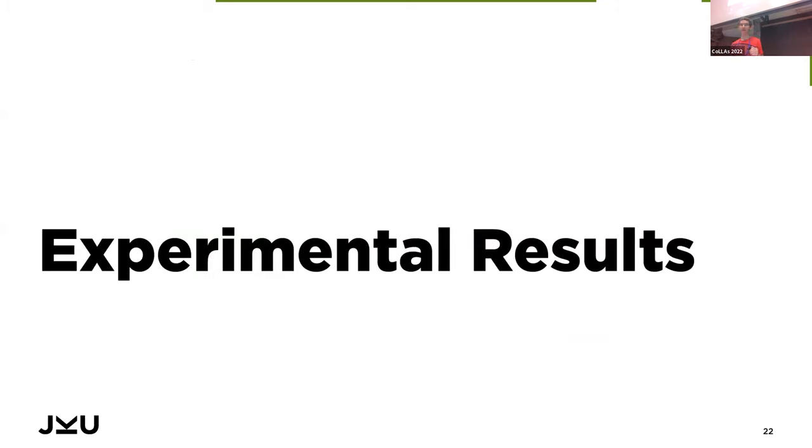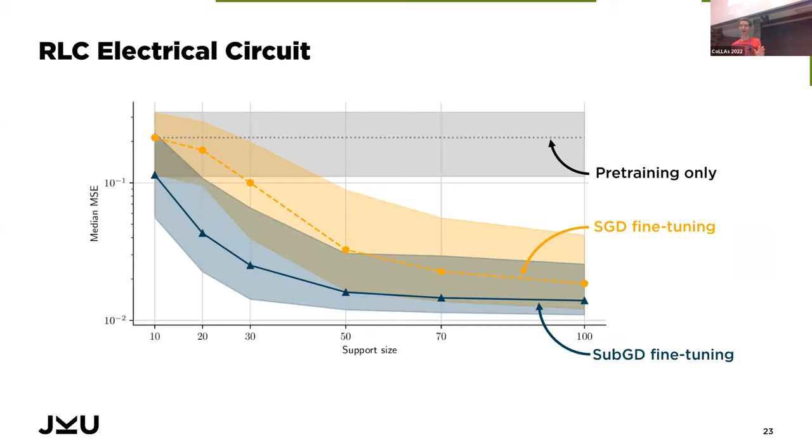Now let me briefly introduce you to some of the experimental results that we had. I won't cover all of what we did in our paper, but for the sake of time I'll just focus on one of the experiments, which is the RLC electrical circuit. The task here is to predict the behavior of an electrical circuit over time, and different few-shot learning tasks are simply given by electrical circuits of different physical properties. We measure the quality of our predictions in terms of mean squared error, which is what you see in the y-axis here, and on the x-axis you can see the support size—so this is the number of available labeled training samples that we had for fine-tuning the model.